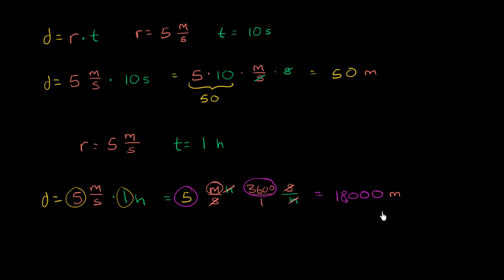But let's just use our little dimensional analysis muscles a little bit more. What if we didn't want the answer in meters, but we wanted the answer in kilometers? What could we do? Well, we could take that 18,000 meters, and if we could multiply it by something that has meters in the denominator and kilometers in the numerator, then these meters would cancel out, and we'd be left with the kilometers.